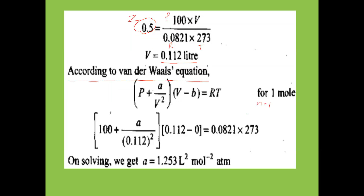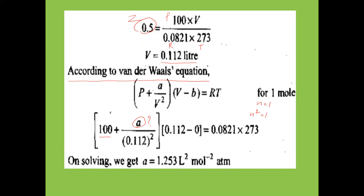For n=1: (P + a/V²)(V - b) = RT. Since b is negligible (b=0), substituting pressure 100 atm, V = 0.112 liters, and T = 273 K, on solving we get the Van der Waals constant a = 1.253 liter² atm mol⁻².